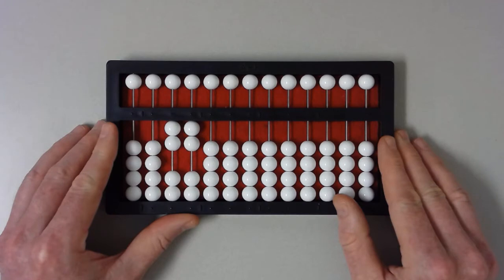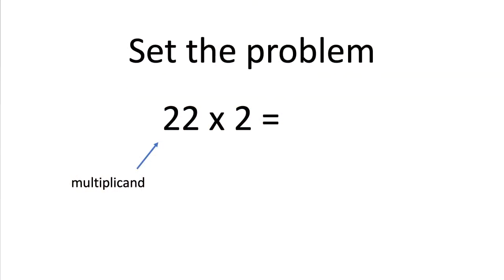Remember, you can always count the number as you set it, or set the number directly. There's no harm in counting if you feel comfortable doing that. So, if twenty-two is the multiplicand, what's the multiplier? The number doing the multiplication is two.